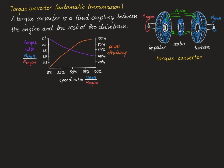Regarding power efficiency of the torque converter, sketched in orange on the right-hand axis: it increases with the speed ratio and reaches a maximum close to 100% speed ratio, with values up to 98% for modern torque converters. To improve efficiency further, most torque converters have a lock-up clutch that sets in at high speed ratios. The lock-up clutch works similarly to a friction clutch, locking the engine shaft and impeller together with the drivetrain shaft and turbine, increasing power efficiency to almost 100%.